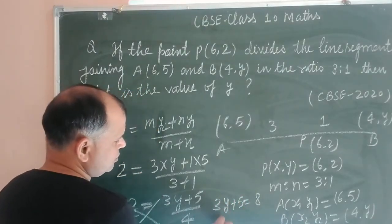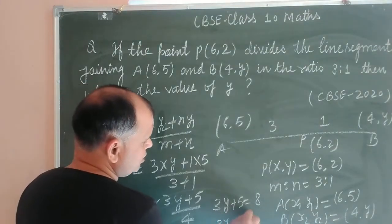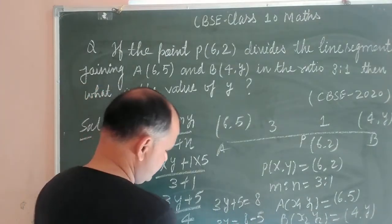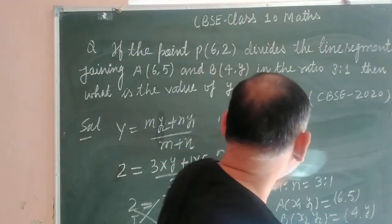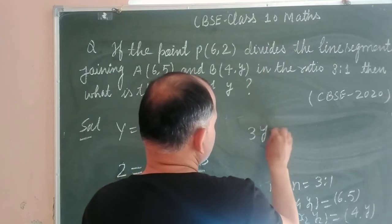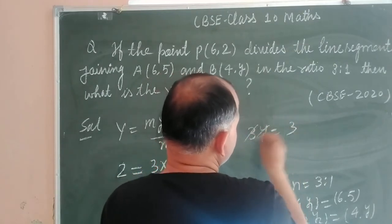And 3Y = 8 - 5, so we got 3Y = 3, which gives Y = 1.